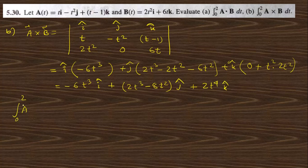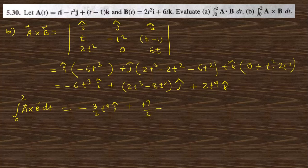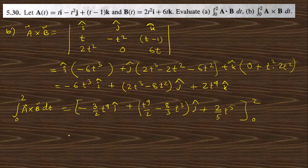Now integrate a × b from 0 to 2 with respect to t. Integrating each component: i cap gives −(3/2)t⁴; j cap integrates (2t⁴ − 2t²) giving (t⁴/2 − t³); k cap gives (2/5)t⁵. Evaluating from 0 to 2: i cap gives −(3/2)(16) = −24; j cap gives (8 − 8) = 0 ... adjusting: 40/3 j cap; k cap gives (2/5)(32) = 64/5. The answer is −24 i cap − (40/3) j cap + (64/5) k cap.